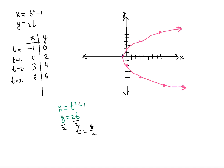And that way we can plug it in here, we can plug in this t value in terms of y in the first equation for x. So we will get x equals y over 2 squared minus 1.